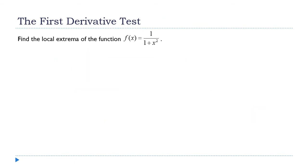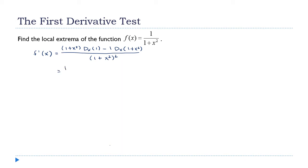How about this next one? Let's take the derivative using the quotient rule. f′(x) is (1 + x²) times the derivative of 1, minus 1 times the derivative of (1 + x²), all over (1 + x²) squared. In the numerator, the derivative of 1 is 0, so we get minus 2x over (1 + x²) squared.